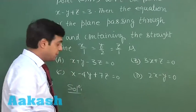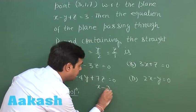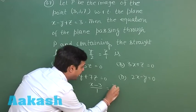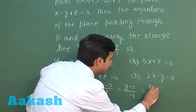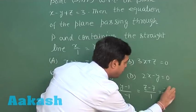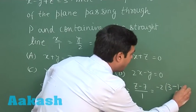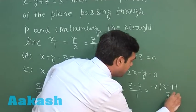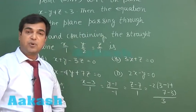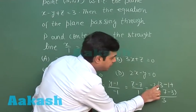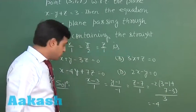We can find the image using the direct formula: (x minus 3)/1 = (y minus 1)/(minus 1) = (z minus 7)/1 = minus 2 times (3 minus 1 plus 7 minus 3) divided by 3. Simplifying this, the numerator gives 6, so the common ratio is minus 4.